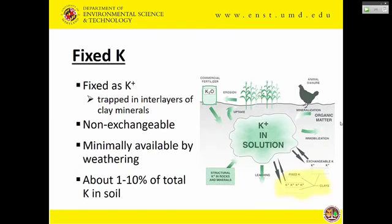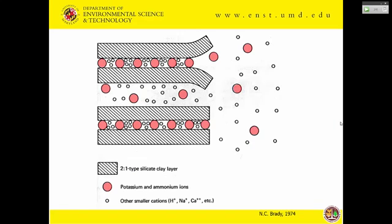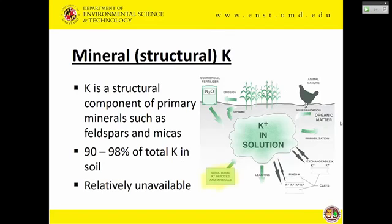Fixed potassium is considered a loss because potassium gets trapped between mineral layers and once trapped, it can't be exchanged back. Minerals can contribute some, but not much. This represents less than 10 percent of total soil potassium. The mechanism: potassium gets between two mineral layers and is not released back into the system. Structural potassium — stored in minerals like mica and feldspar — is where most of the potassium in soil is stored. It's relatively unavailable: under normal circumstances, it won't be released unless all soil solution and exchangeable potassium is depleted, and even then only on very long timescales.